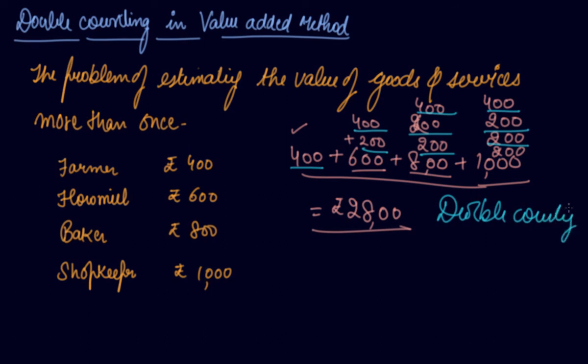You are counting it again and again. You are counting the value of wheat in the case of floorman as well, baker as well, shopkeeper as well. So this is the problem of double counting. We have estimated the value of wheat 3 times, value of flour 2 times, value of bread 2 times. This is the problem in the value added method.